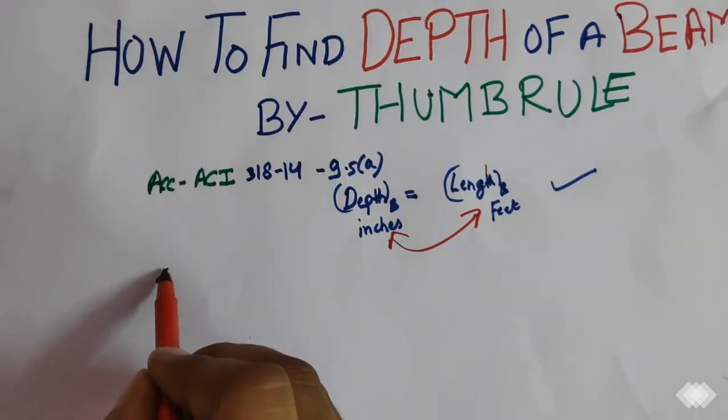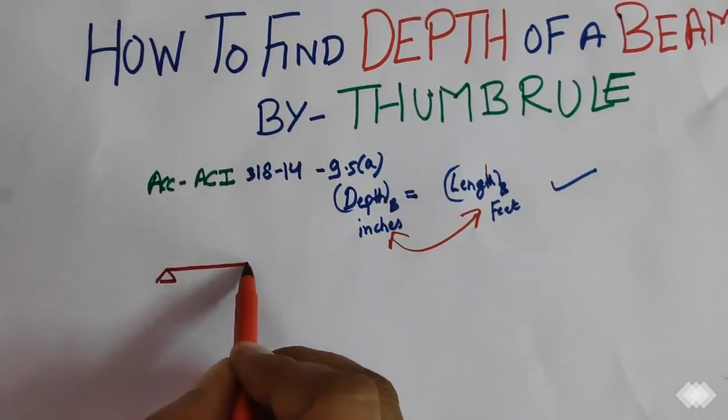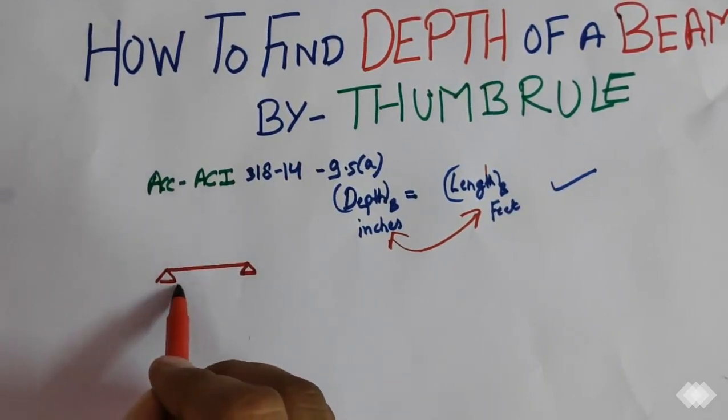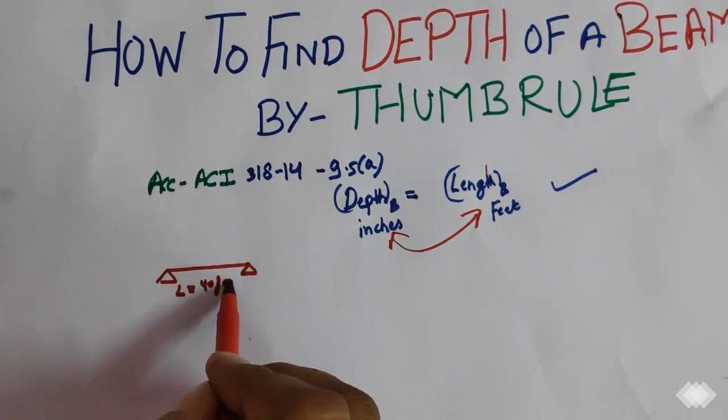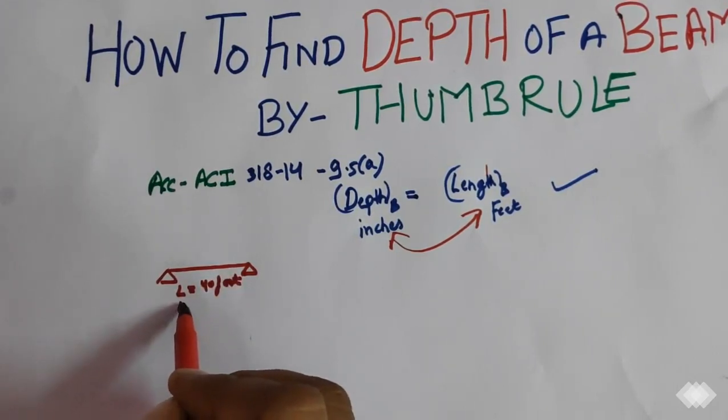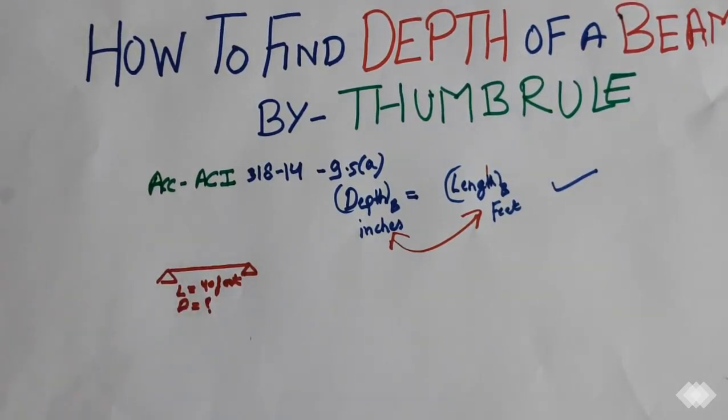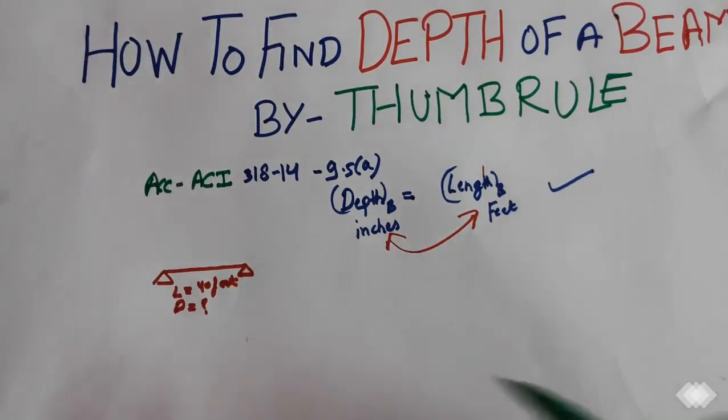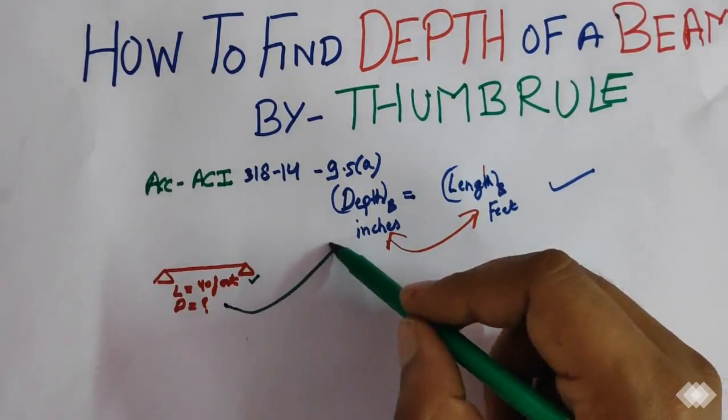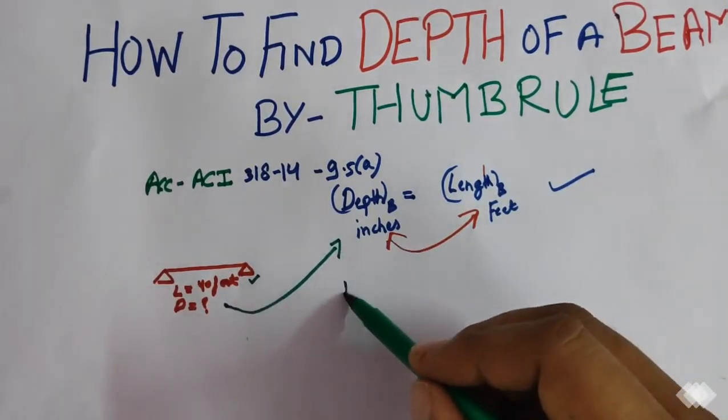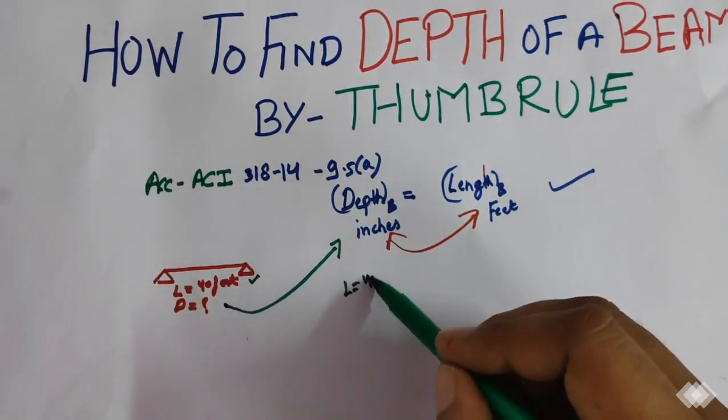So we will take a simple example. Like this is a beam and length is 40 feet. So what will be its depth? So when length of the beam is 40 feet, we can easily find depth of beam from this concept.